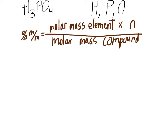The next problem: phosphoric acid, H₃PO₄, is a colorless syrupy liquid used in detergents, fertilizers, toothpaste, and carbonated beverages. We need to calculate the percent composition by mass of hydrogen, phosphorus, and oxygen. All the other info is just fluff — all we need is the molecular formula and the equation.